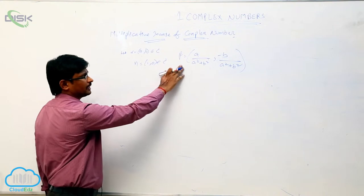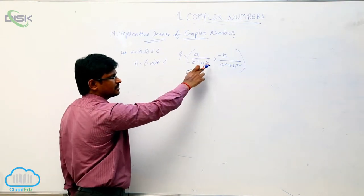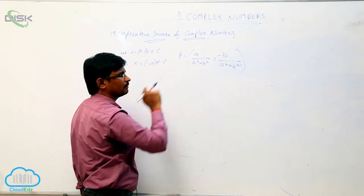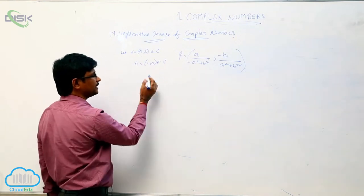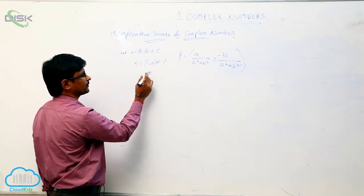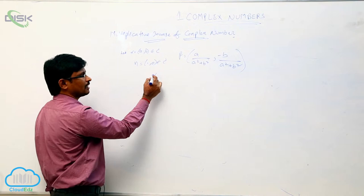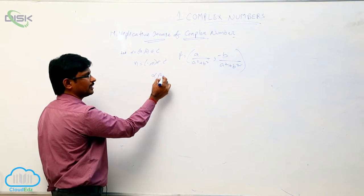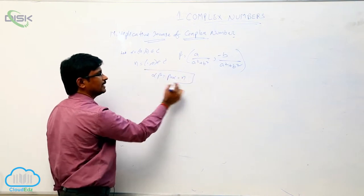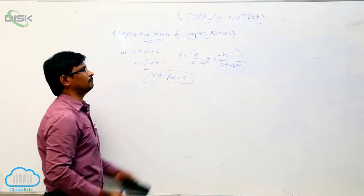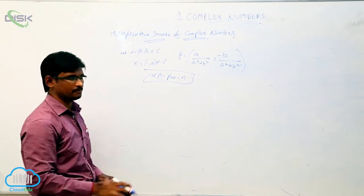Now, take one complex number beta = (a / (a² + b²), -b / (a² + b²)). If this beta satisfies alpha × beta = beta × alpha = (1, 0), then we can say that beta is called the multiplicative inverse of the complex number.